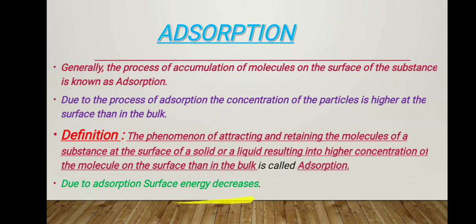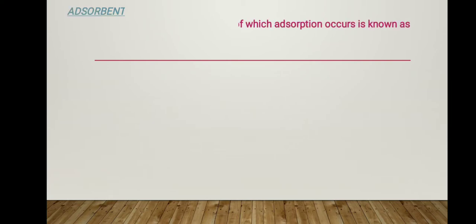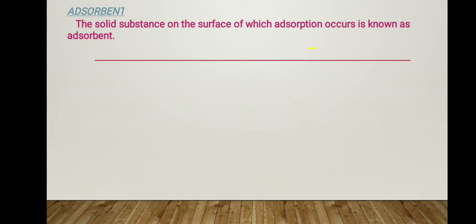To understand adsorption better, let us define some basic terms. The first term is adsorbent — the solid substance on whose surface adsorption occurs is known as the adsorbent. It is the substance that provides the surface for the accumulation of molecules. In the example of rubbing a blackboard with a duster, the duster behaves as the adsorbent because it provides its surface for the accumulation of dust particles.